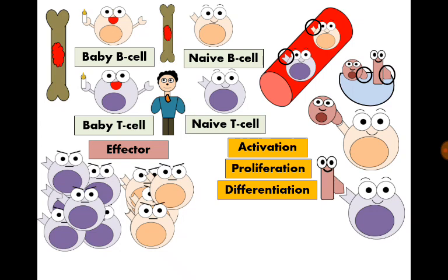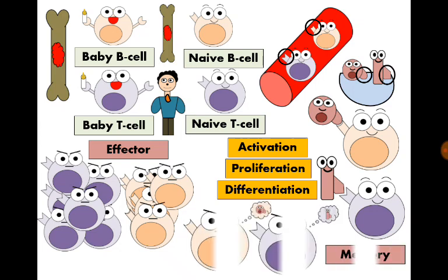The T cell is now ready to kill abnormal cells or to secrete cytokines, and the B cell is now ready to produce antibodies. Lastly, they form memory cells — ready to kill the same microbe the next time it enters the body, more rapidly and more effectively.